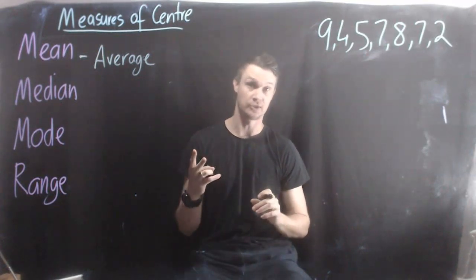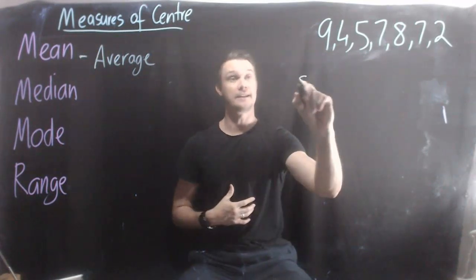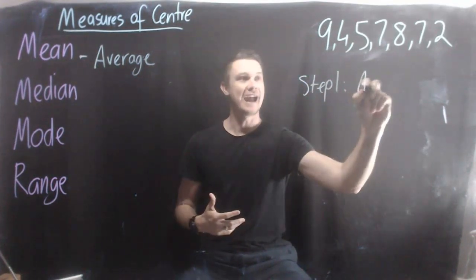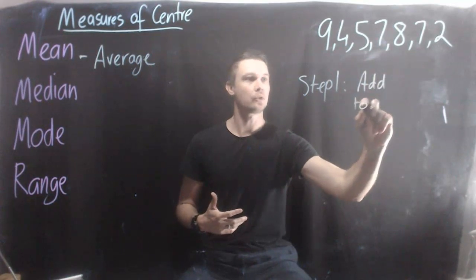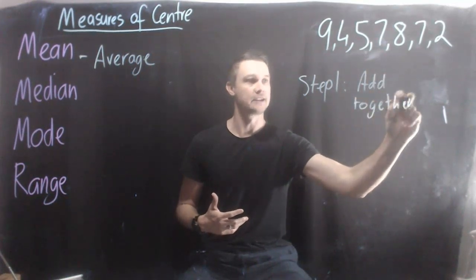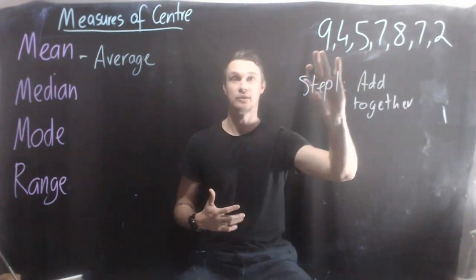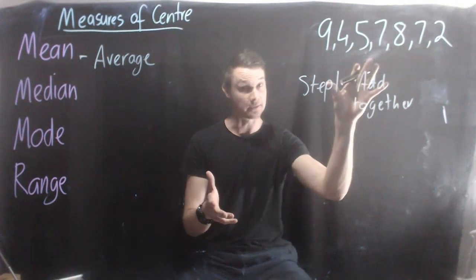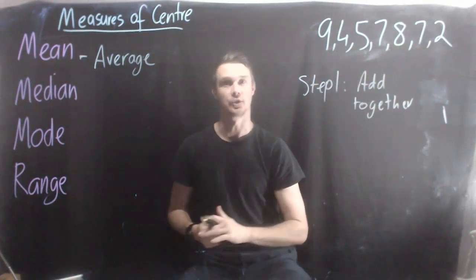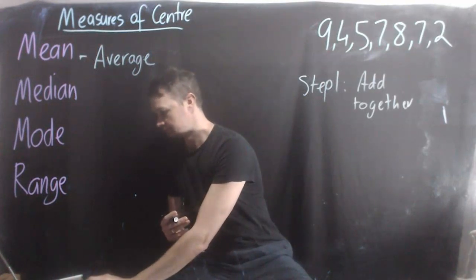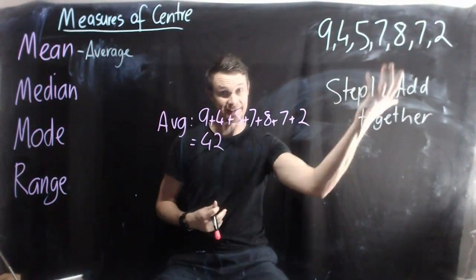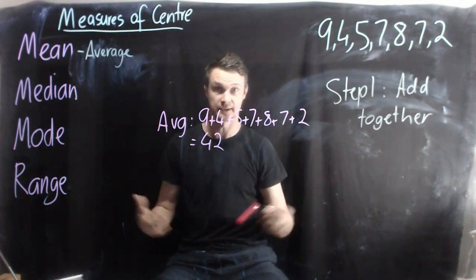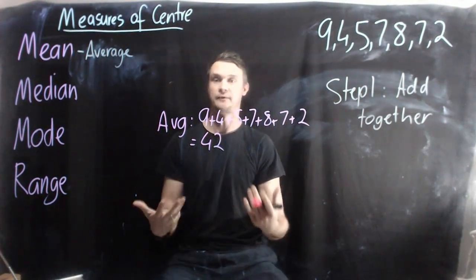There are two steps you need to do to calculate that. Step one — and I'll get you to write this down — is to add all the bits of data together. So I'm going to add all these together, and that's step one. I've added 9 plus 4 plus 5 plus 7, etc., and what I got was 42.